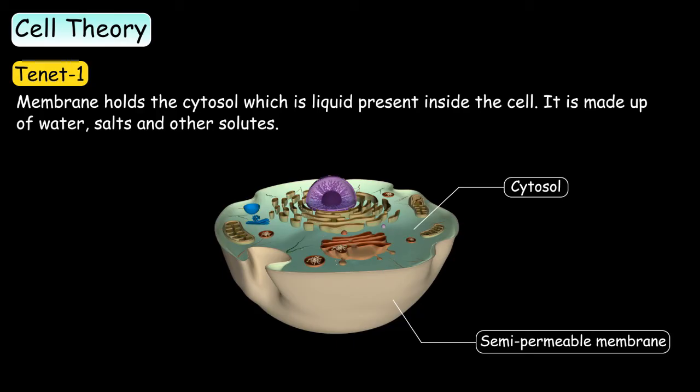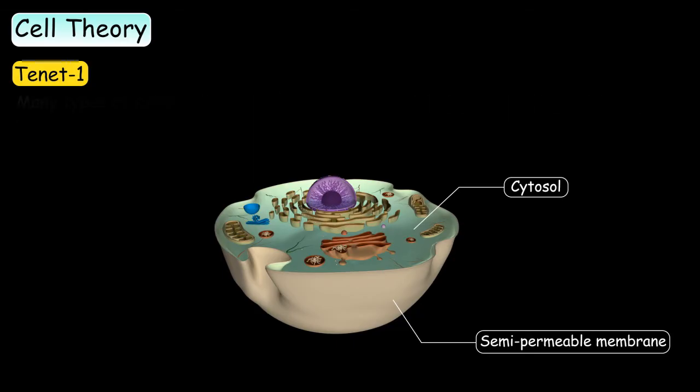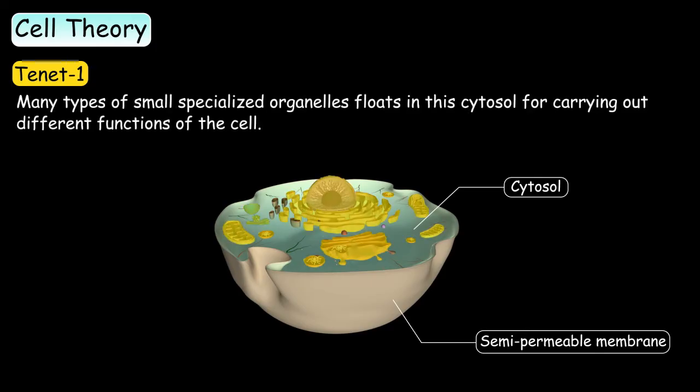Cytosol is made up of water, salts and other solutes. Many types of small specialized organelles may float in the cytosol that carry out different functions of the cell.